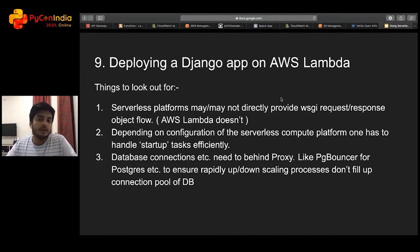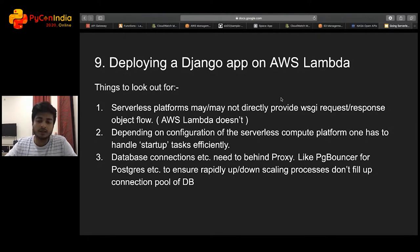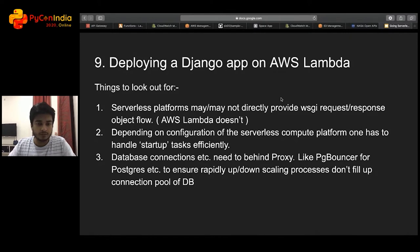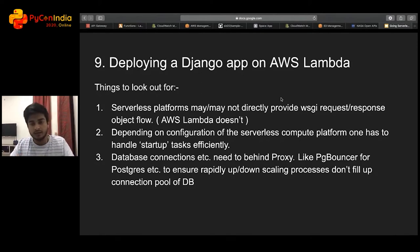Now, things to look out for when specifically making a web application — I'm using Django as an example, but since most Python web frameworks follow a WSGI request-response flow, you should be able to apply this to a Flask application as well. The biggest challenge is that traditional serverless platforms mostly do not provide the web service gateway interface request-response object flow. When I run a Django web server, the request is converted to a WSGI request and the application returns a WSGI response. So on a serverless platform, you have to add another layer between the client and your WSGI wrapper.